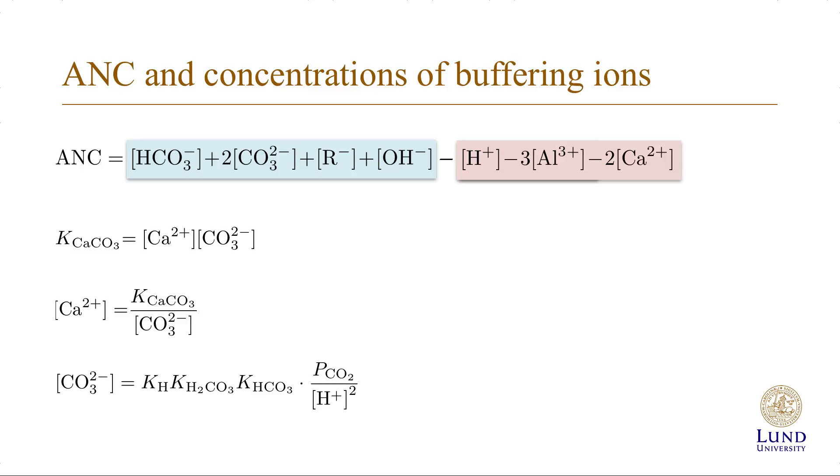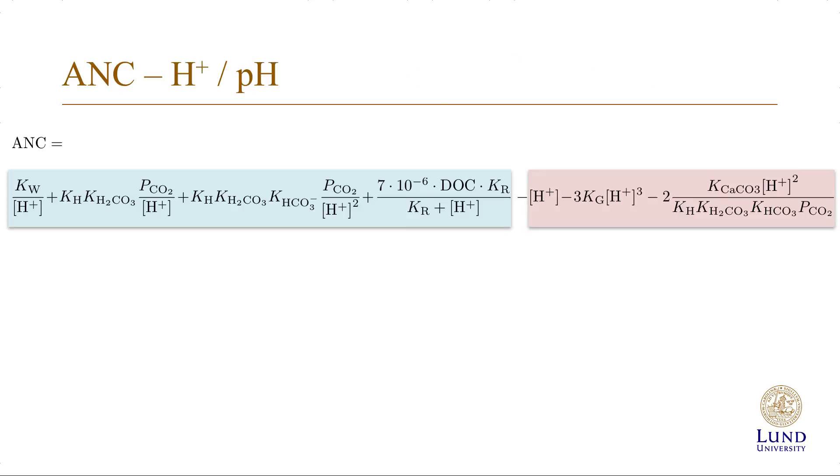And we can combine the last two expressions to get an expression for the calcium 2 plus concentration as a product of the solubility constant times H plus squared divided by a series of constants and the carbon dioxide pressure.